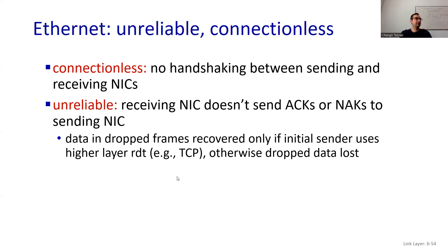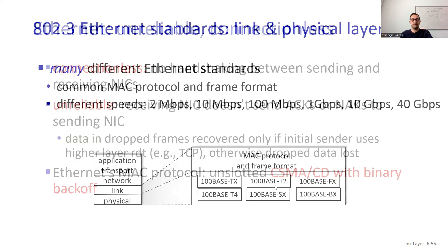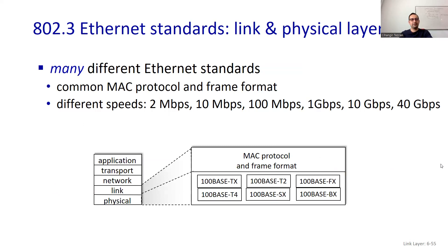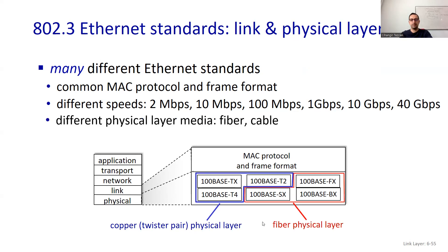Ethernet uses unslotted CSMA with collision detection with binary backoff, as discussed in previous slides. There are many different Ethernet standards sharing a common MAC protocol and frame format, but allowing different speeds — from 2 megabits up to 40 gigabits per second. For example, '100' in a standard name represents 100 megabits per second. Standards starting with T use twisted-pair physical layers, while those starting with F use fiber physical layers.